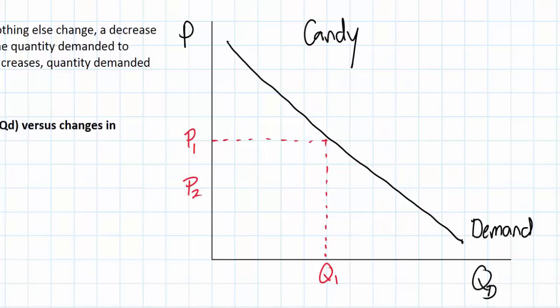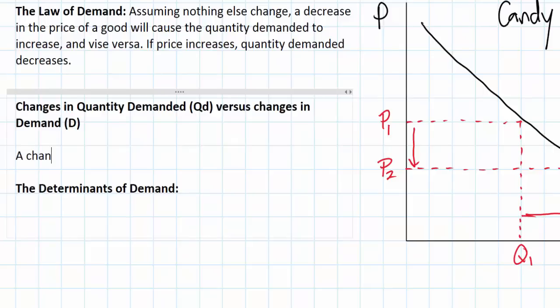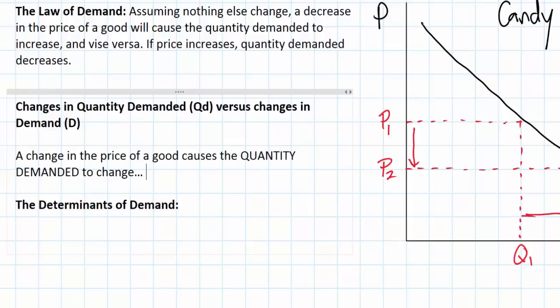So for example if the price falls to P2, we can see that that would lead to an increase in the quantity demanded. Notice that I'm saying quantity demanded and not demand — that's very intentional. There is a big difference between a change in the quantity demanded for a good and the demand for that good, and that in fact is the purpose of this lesson. A change in the price of a good causes the quantity demanded to change. I'm using the term quantity very intentionally here — that is not the same thing as a change in the demand for the good.